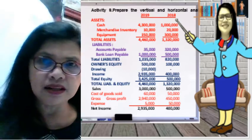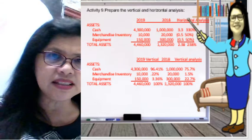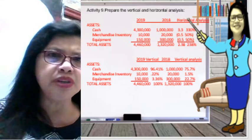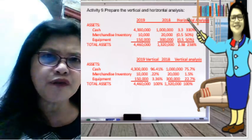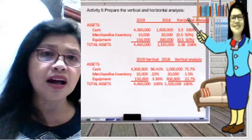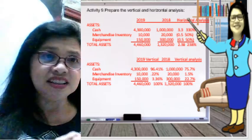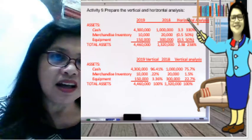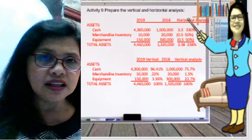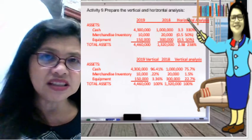Let's start with the assets account. To compute the horizontal analysis, we get the peso change of the two years. The formula is: current year minus previous year, divided by the previous year. That gives the horizontal percentage change. In this case, the cash account is 4,300,000 minus 1,000,000 divided by 1,000,000.